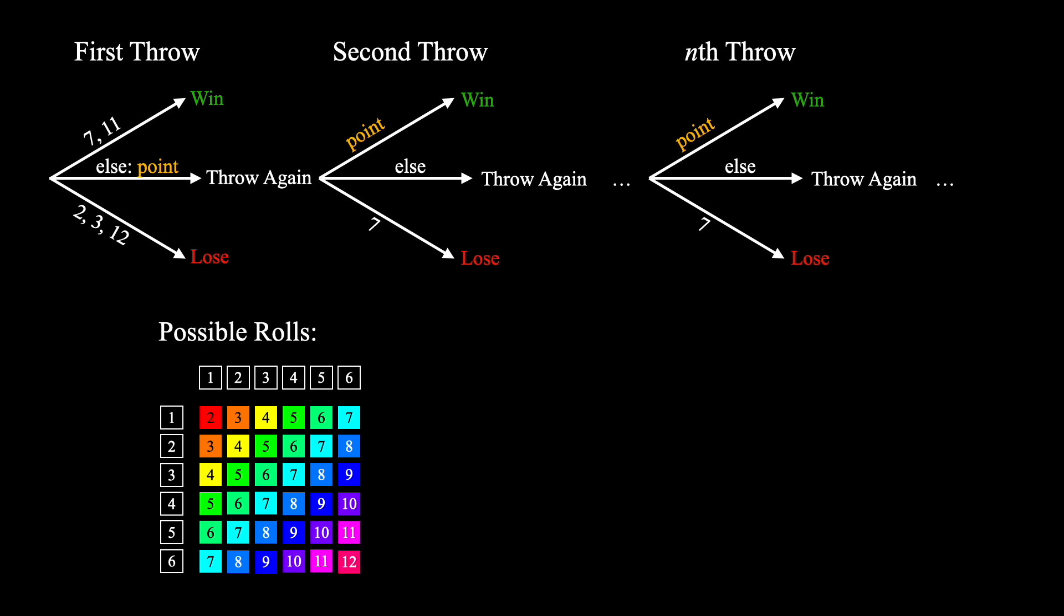Looking at these sums reveals a few things to us. Firstly, we see that there are 36 possible outcomes. However, there are not 36 possible sum values. The sums must be bounded by 2 and 12. Another observation is that even though each of these tiles on the grid are equally likely, some sum values are more likely than others.